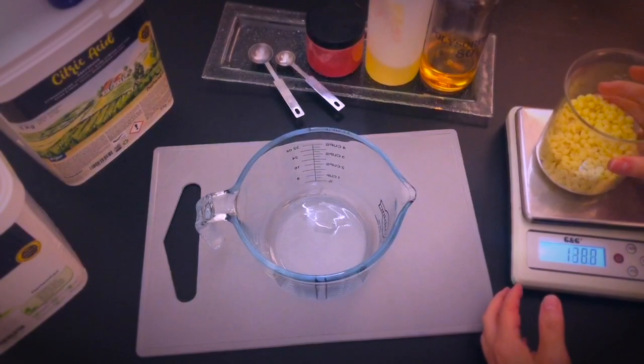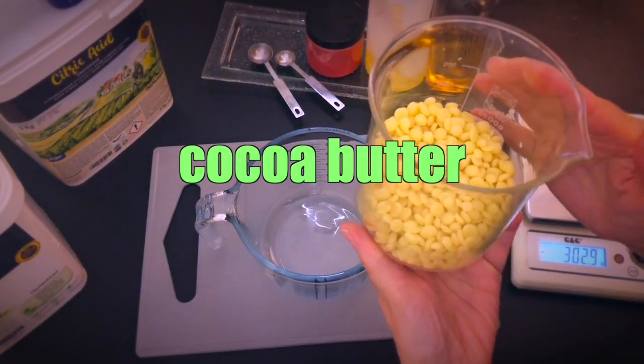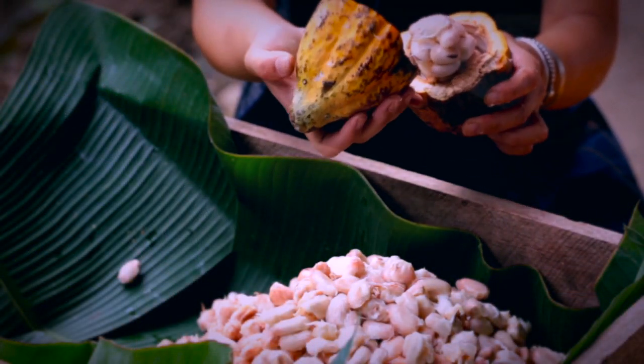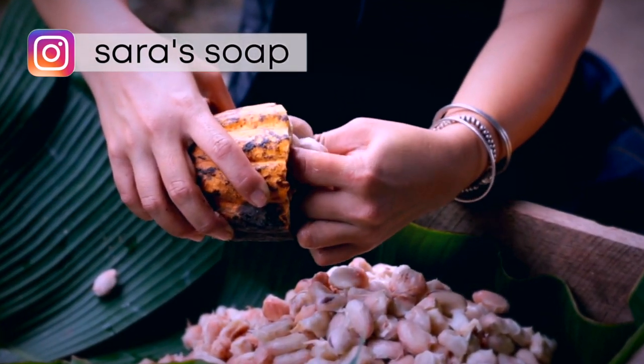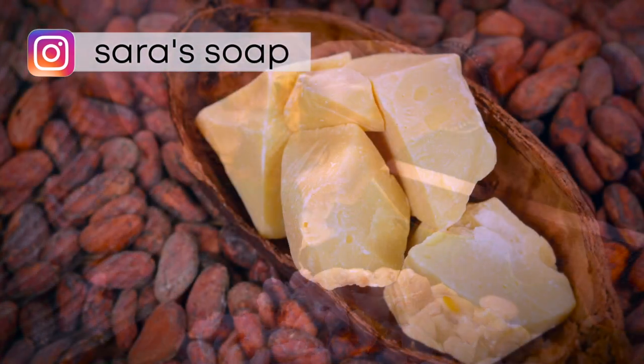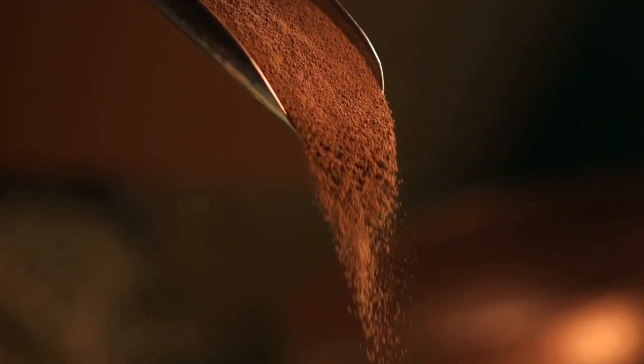Our main skincare ingredient is cocoa butter containing amazing benefits for our skin. Cocoa butter is a type of vegetable fat that comes from raw cocoa beans. Manufacturers extract cocoa butter by roasting, stripping and then pressing cocoa beans to separate the fat. The remaining portion is turned into cocoa powder.